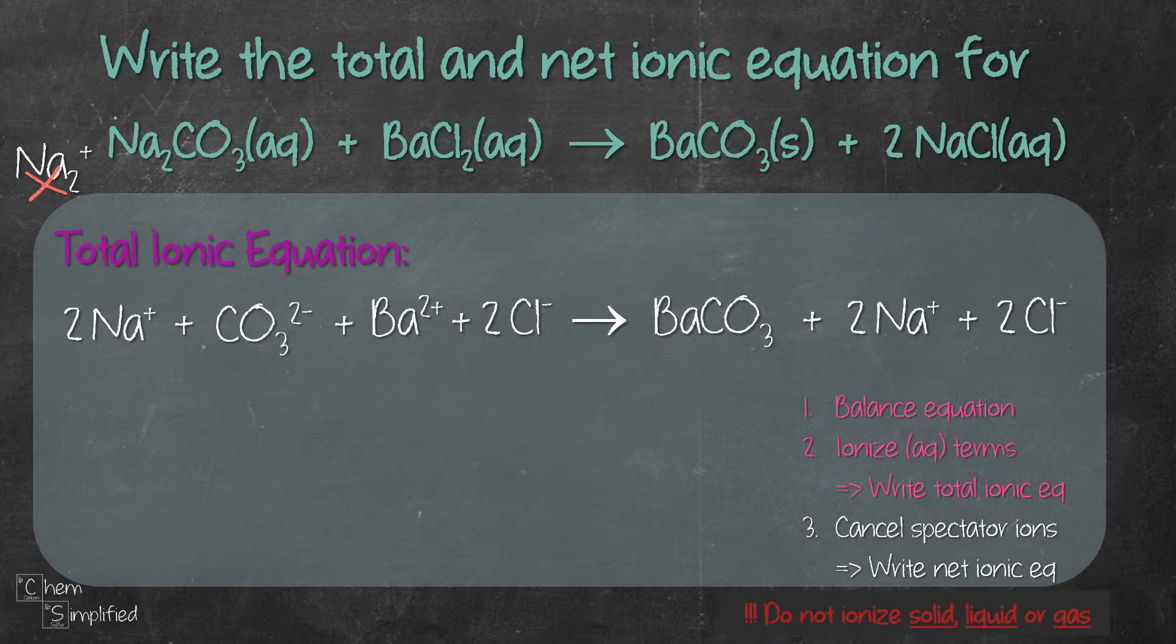Now that we're done with step 2, moving on to step 3, we need to cancel spectator ions. And what are spectator ions? Well, it's actually an ion that exists on both sides of the equation.